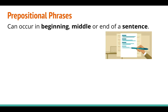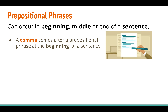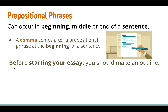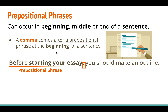A prepositional phrase can appear at the beginning, in the middle, or at the end of a sentence. When a prepositional phrase is at the beginning of a sentence, we're going to put a comma after it. For example, 'Before starting your essay, [comma] you should make an outline.' If we switch the two clauses and put 'before' at the end of the sentence, there will be no comma. Only put a comma after a prepositional phrase that is at the beginning of a sentence.